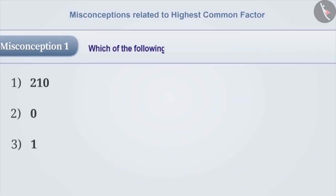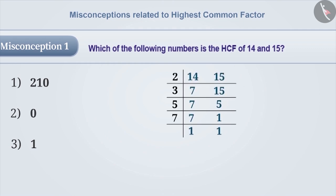Misconception 1. Which of the following numbers is the HCF of 14 and 15? Due to misunderstanding, sometimes the method of LCM is used instead of HCF. The result will be 210 which is an incorrect answer.